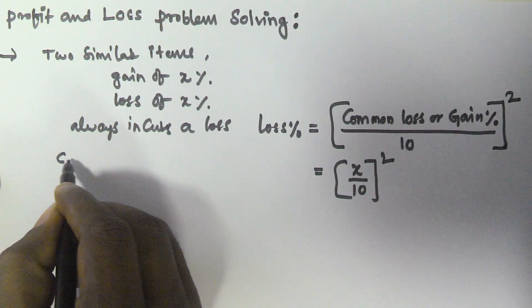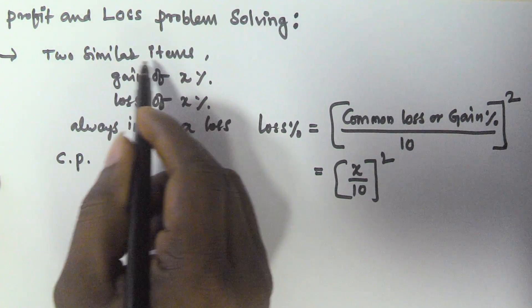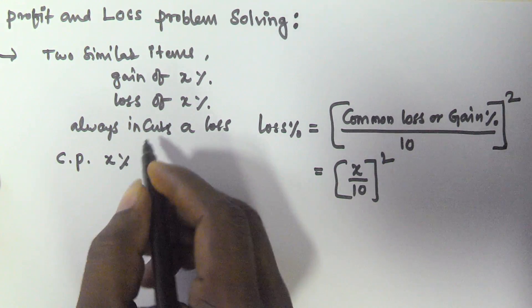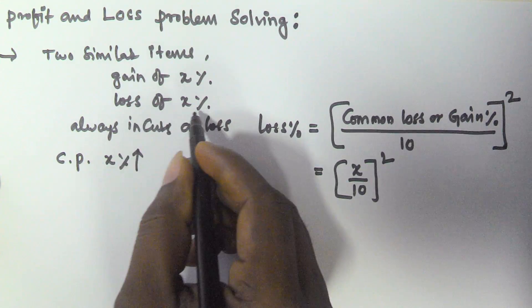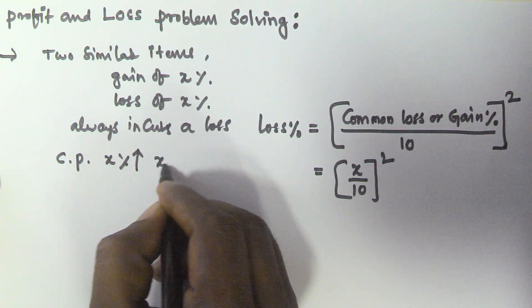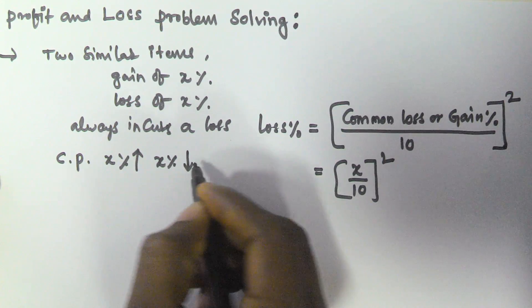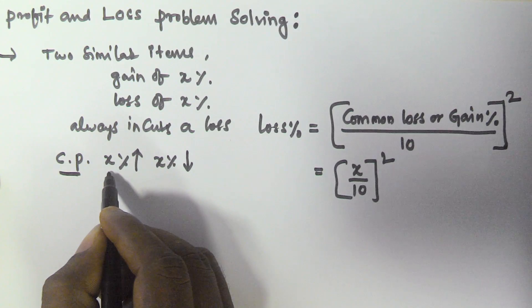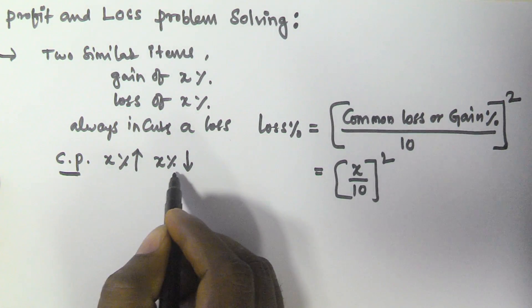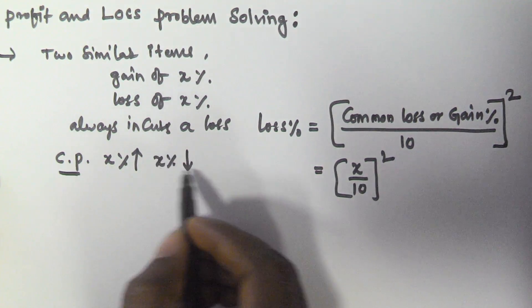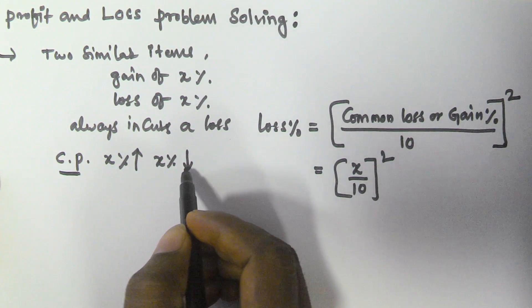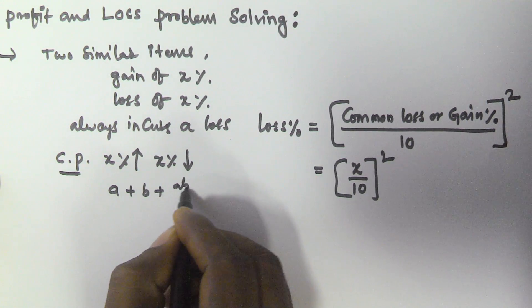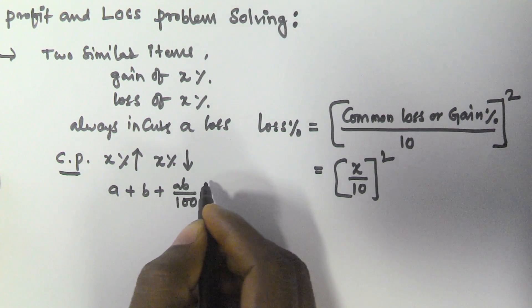Let us assume the cost price of one article is some value, and the common percentage is x. First, we are selling at x percentage gain, and second, we are selling at x percentage loss. So on the cost price, two successive percentage changes are there — one at the rate of increment (gain) and one at the rate of decrement (loss). The overall percentage change is given by A + B + AB/100, as explained in the previous video.